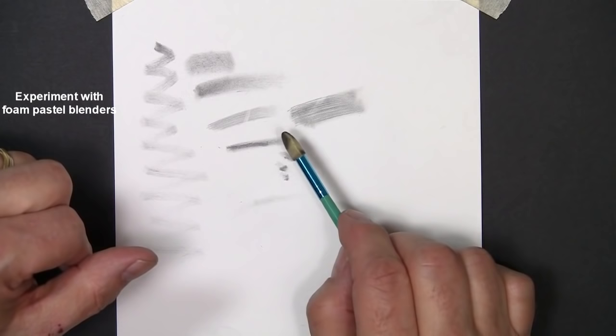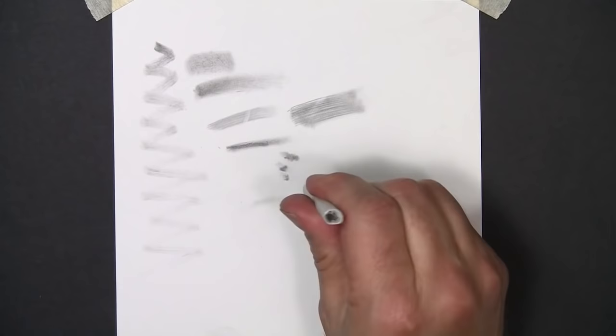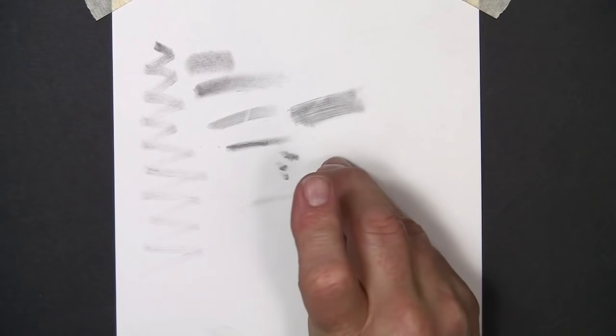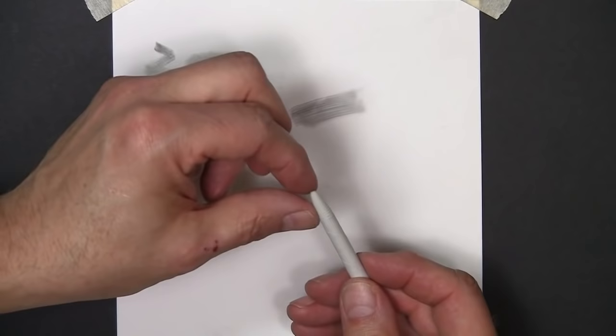Getting back to the tortillion for a second, if you do happen to push down and use it on its very tip, it'll have a tendency to collapse like that. Notice how it's not as sharp as it was before and then this is actually an even harder tip which can damage the paper. If that happens, get yourself a paper clip and straighten it out.